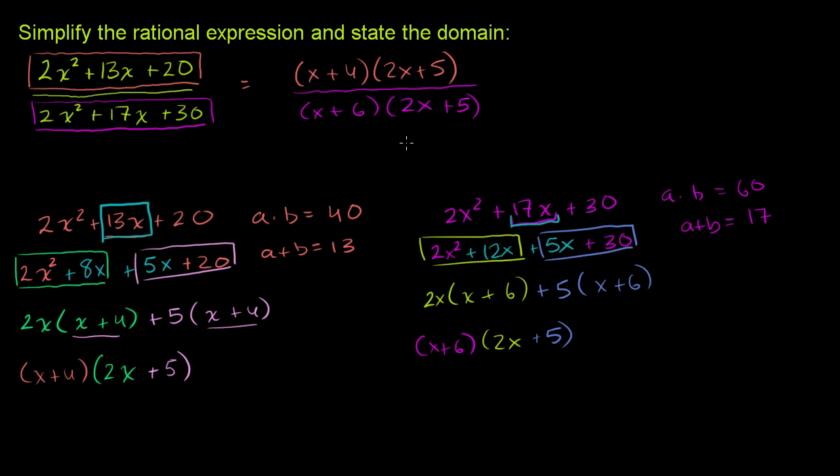And then the denominator is x plus 6 times 2x plus 5. Now, you might already jump out at you that you have a 2x plus 5 in the numerator and the denominator, and we can cancel them out. And we will cancel them out. But before we do that, let's work on the second part of this question, state the domain.